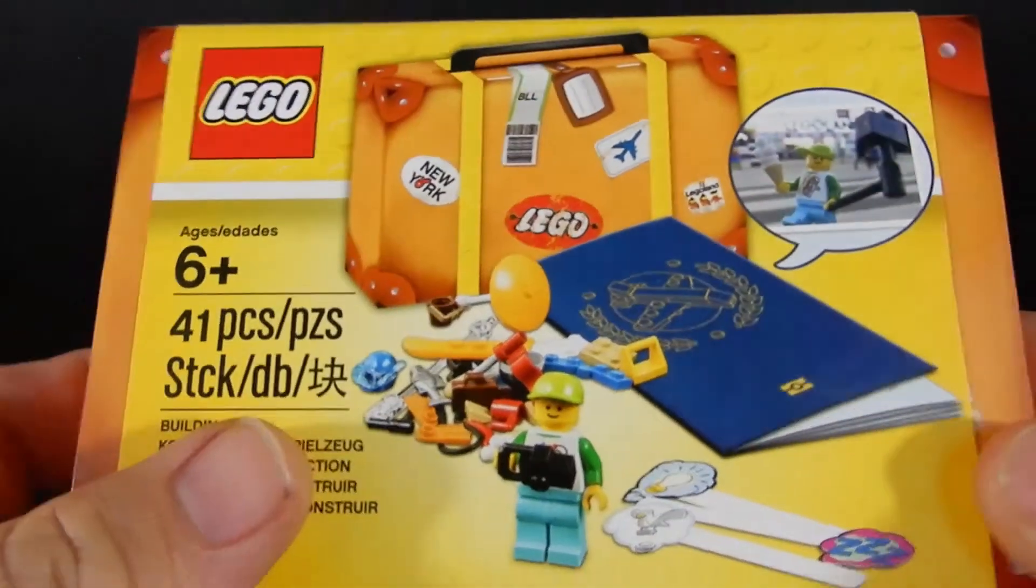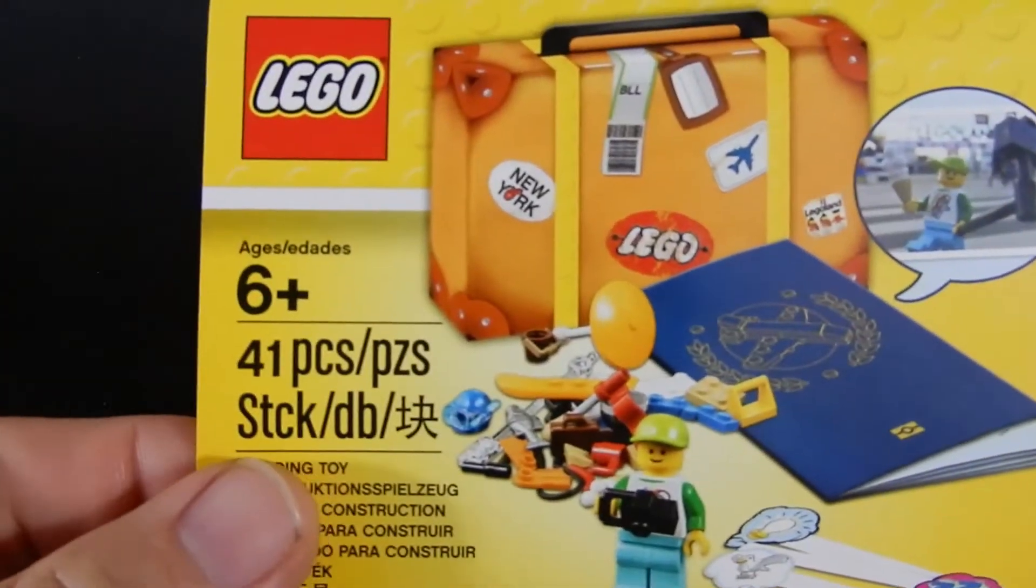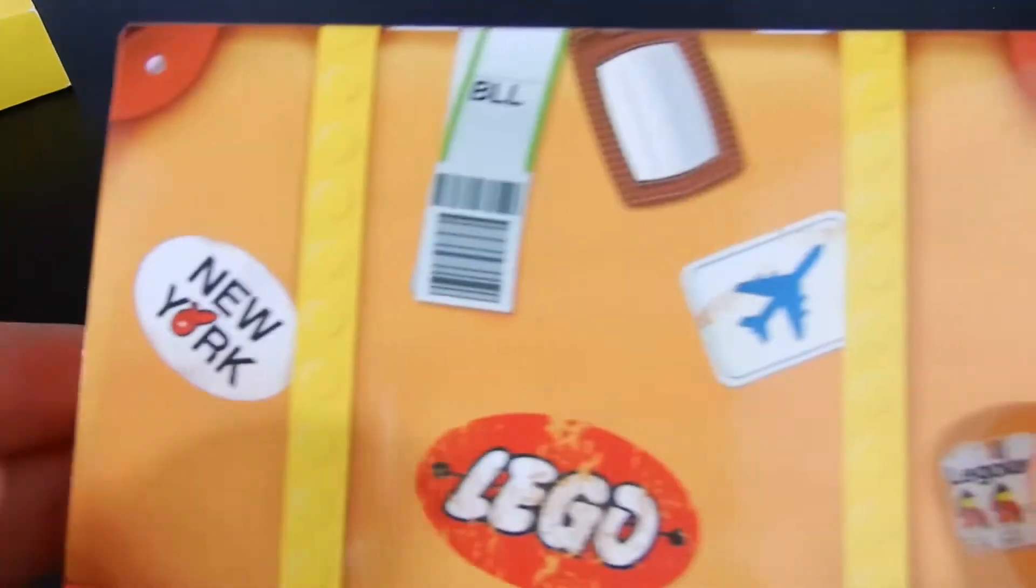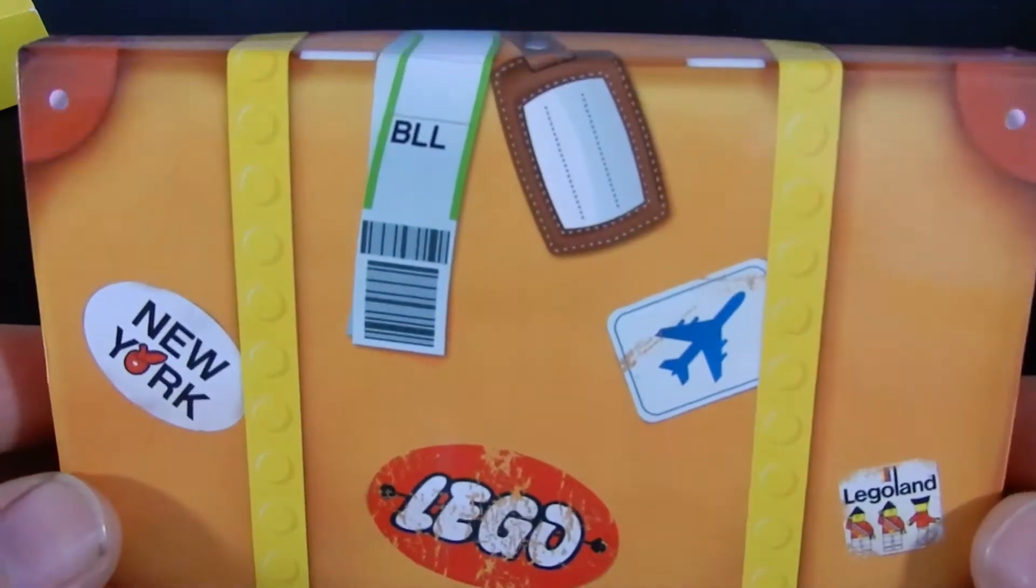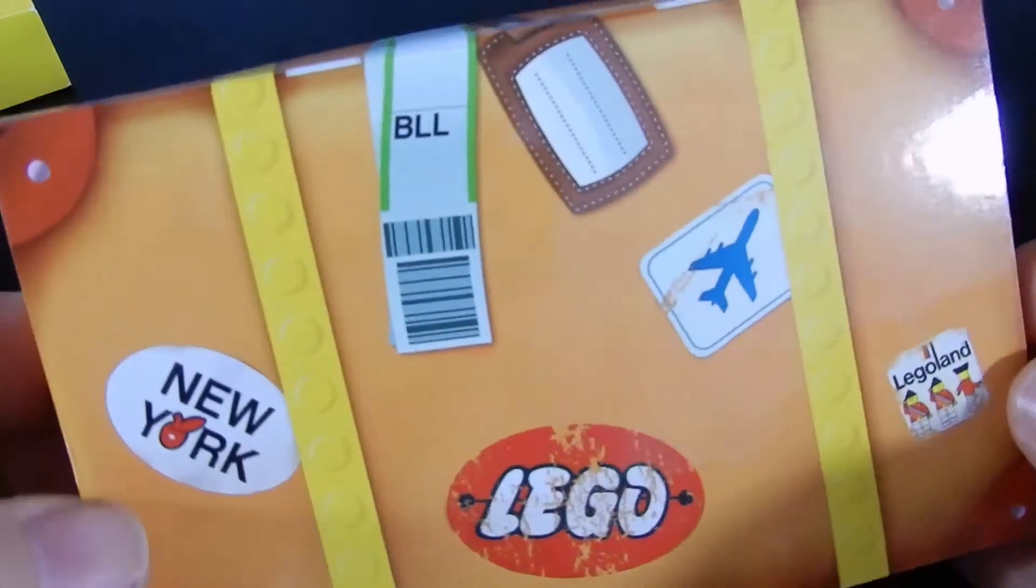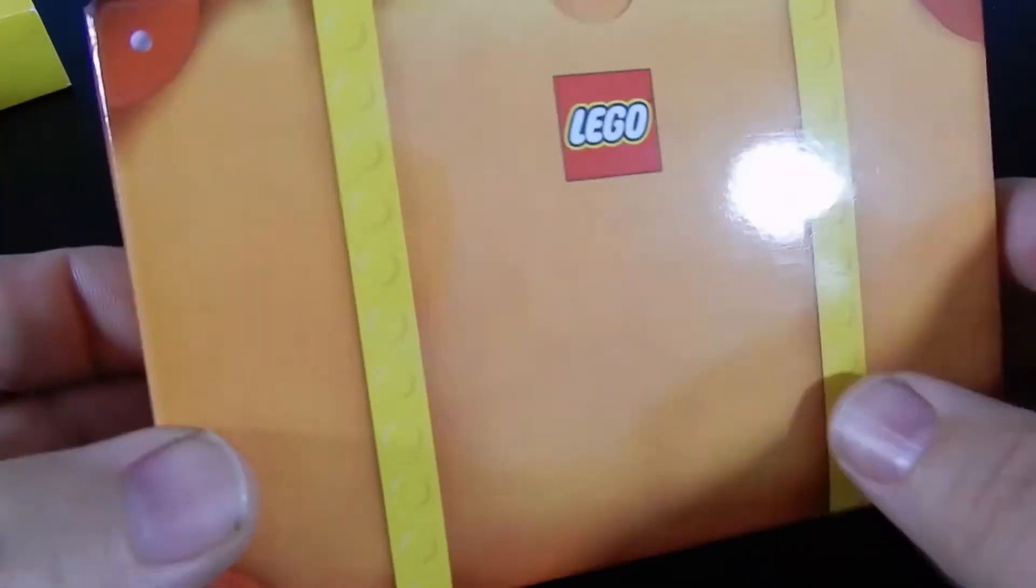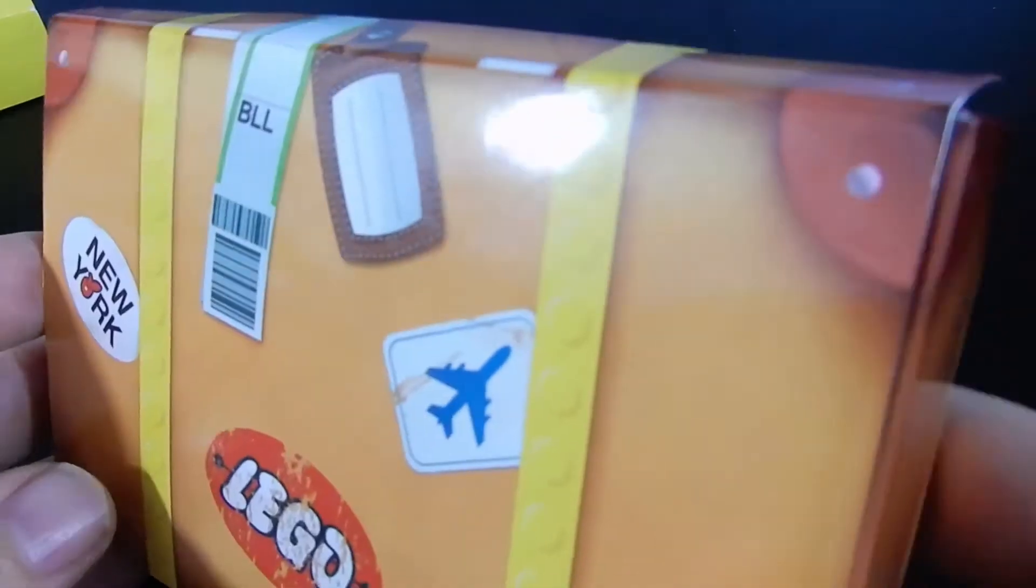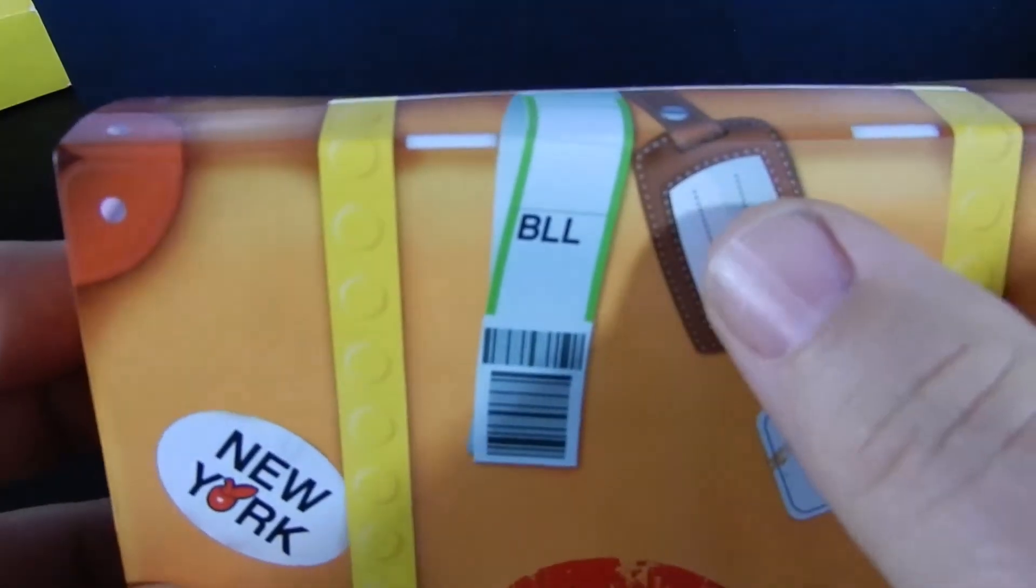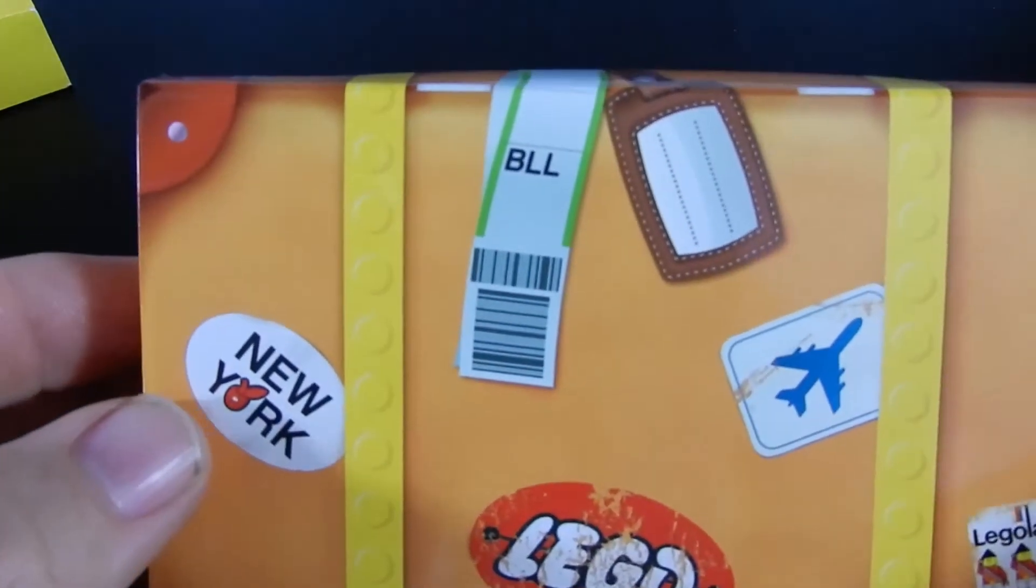So the packaging for this set has a sleeve which is similar to some other sets that we've seen. Underneath is revealed this kind of rustic looking suitcase. It has a Lego logo on the back and some nice details around the corner. You've got a luggage tag, a claim tag,